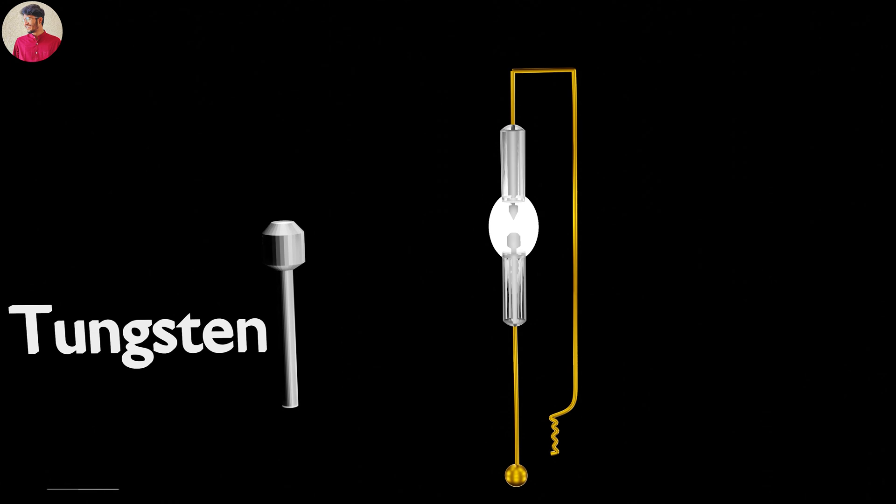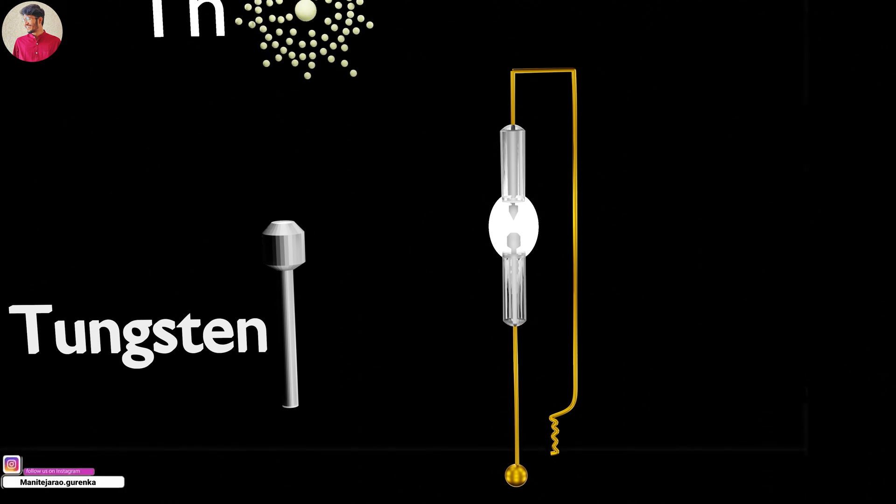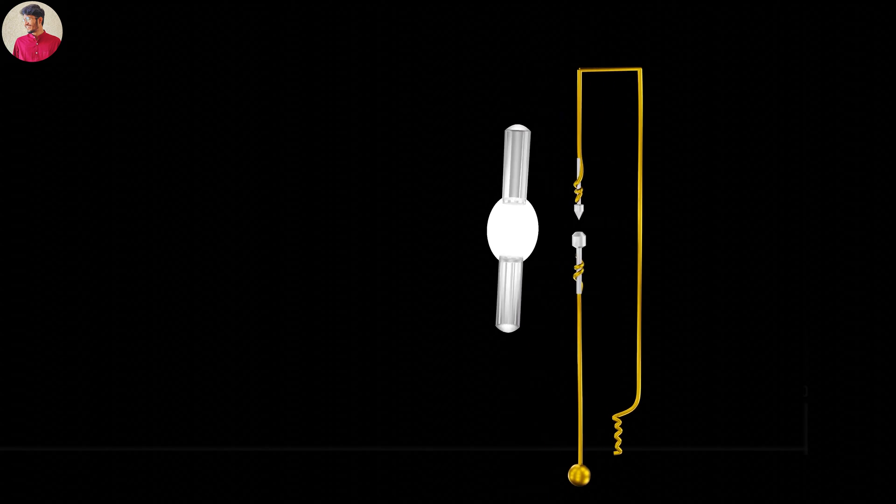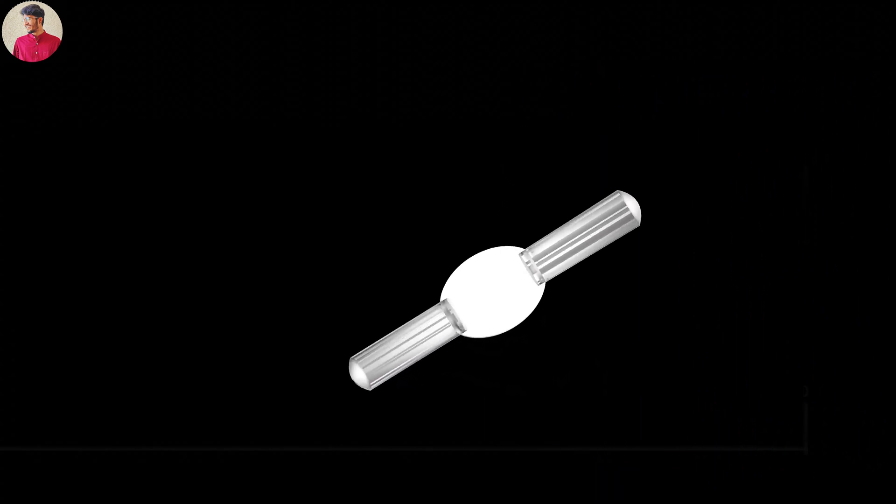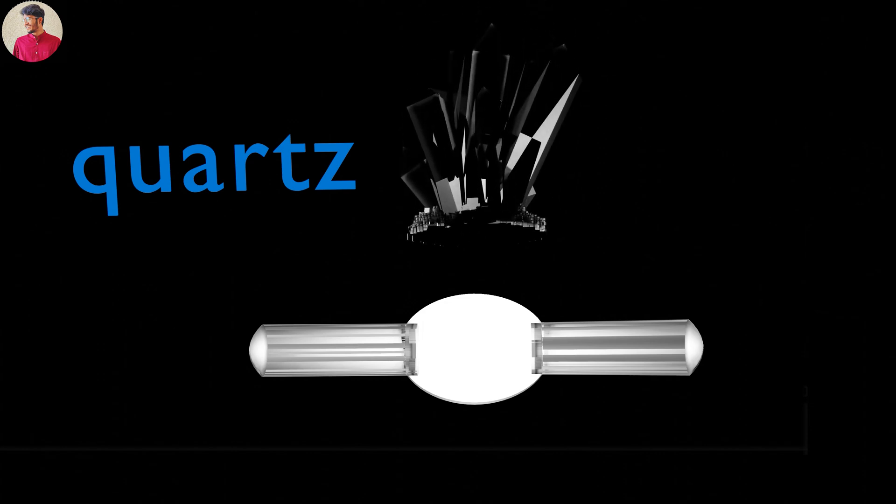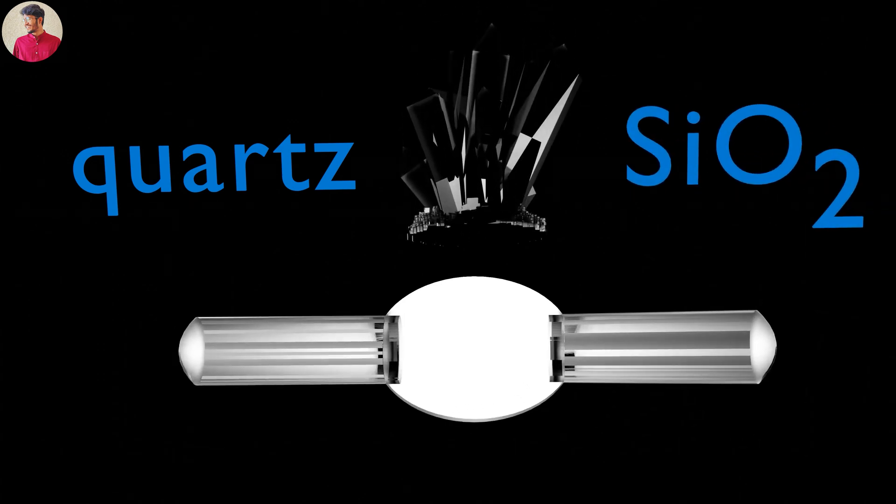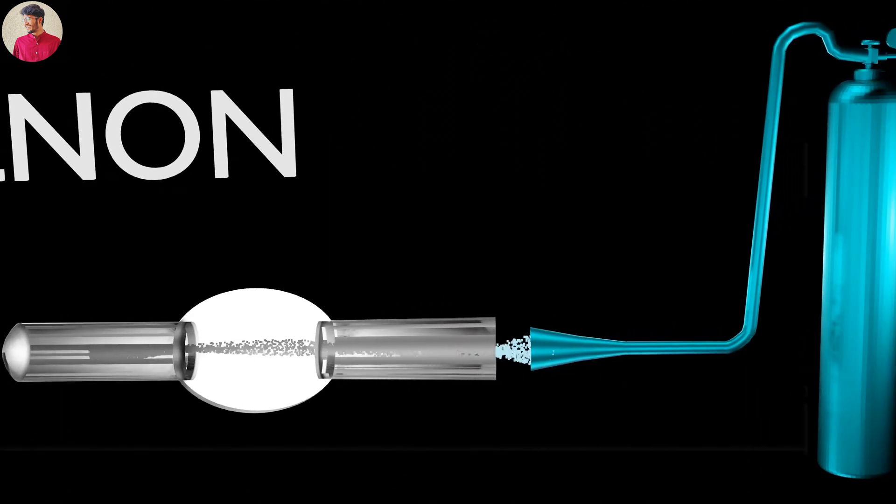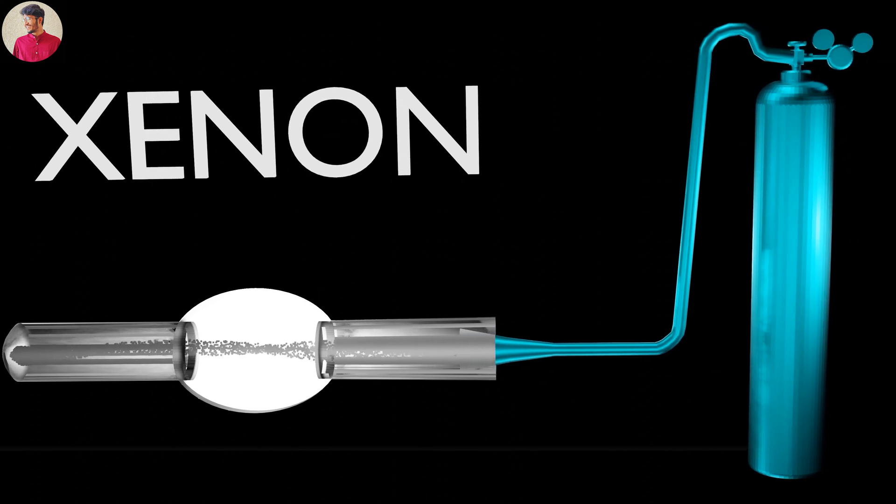Thoriated tungsten is tungsten added with 1 to 2 percent thorium to give extra strength to the arc by enhancing the electron emission capability of tungsten. Fused silica, also called quartz, is non-crystalline transparent silicon dioxide glass which provides extra strength and almost zero thermal expansion. The envelope or bulb is filled with xenon gas at very high pressure.